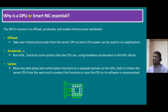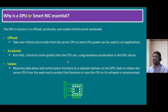Accelerate means running infrastructure functions more quickly than the CPU can, using hardware acceleration in the DPU silicon. DPU has quicker running functionalities compared to a CPU. Isolate means moving key data plane and control plane functions to a separate domain on the DPU — both to relieve the server CPU from the work and to protect those functions in case the CPU or its software is compromised.